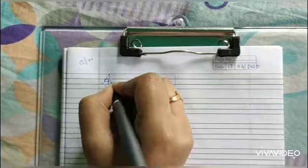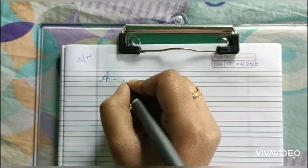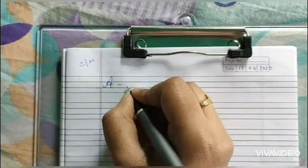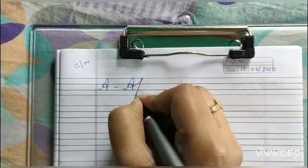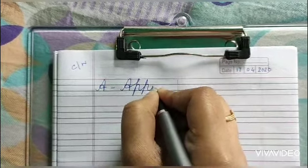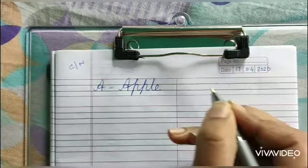A for - you had written ant, now you can write apple. A, double P, L, E.